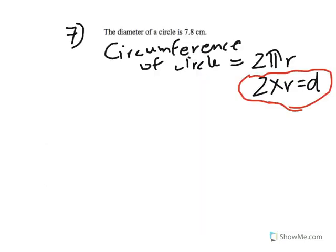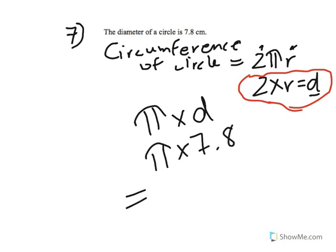Question 7 says the diameter of a circle is 7.8 centimeters — calculate the circumference. Circumference is the perimeter of a circle, and the formula is 2πr. Since 2r equals d, this can also be written as πd. So all we need is π times 7.8, which gives 20.5 centimeters to 3 significant figures.